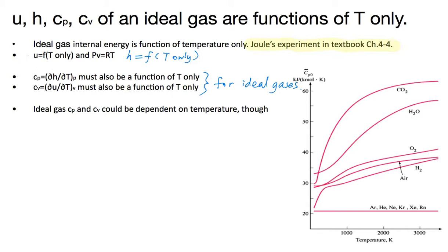However, there are some ideal gases whose specific heats are actually constant — they do not change with changing temperature. These are the so-called noble gases. What makes the noble gases different from other gases is that noble gases are monatomic, meaning their molecules consist of only one atom, while other gases have multiple atoms in each of their molecules.